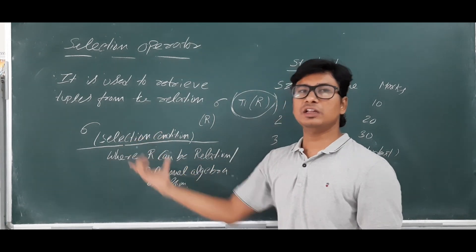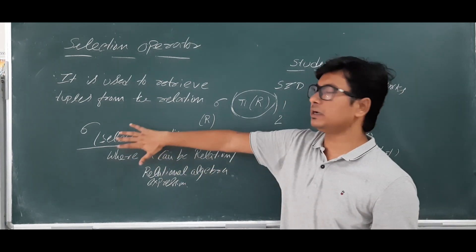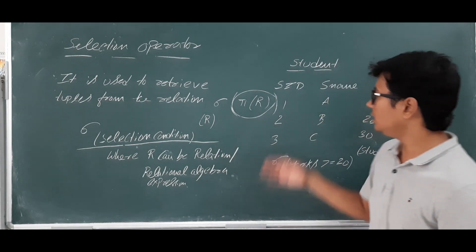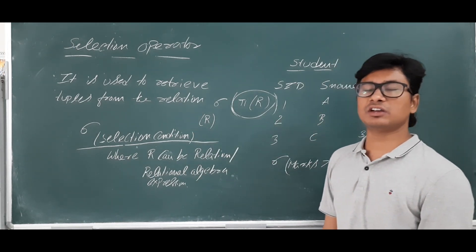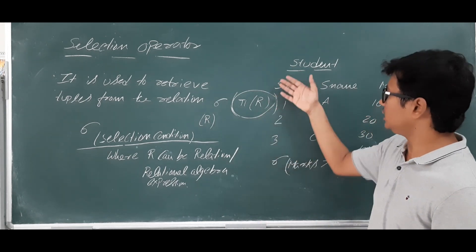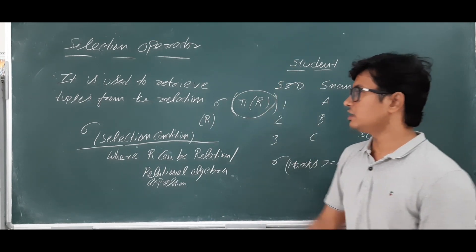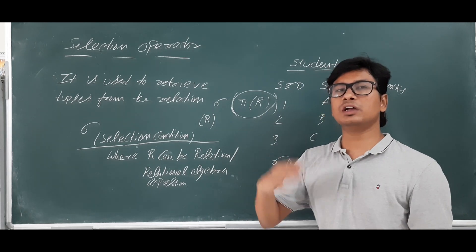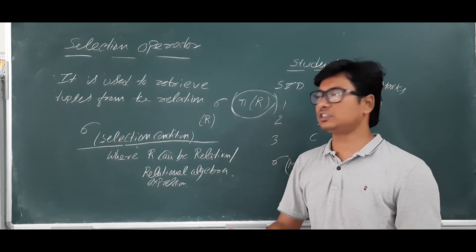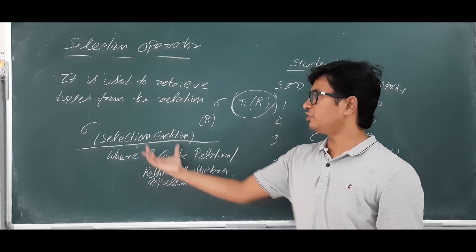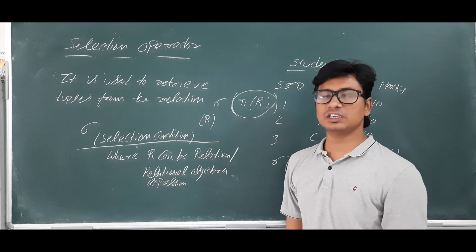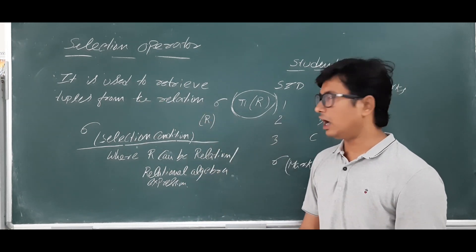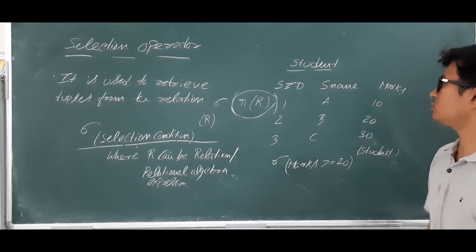If you mention a condition, only the tuples which satisfy that condition will be retrieved. If you do not mention any condition, then all the tuples in the relation R will be retrieved. So if a condition is given, only matching tuples are returned; if no condition is given, all tuples are returned.